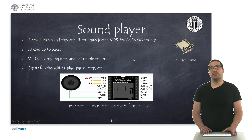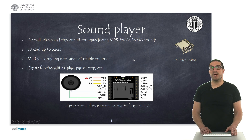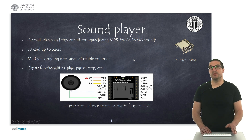As an alternative, we have a sound player which is the DF Player Mini. It's a very cheap and tiny circuit we can use for reproducing MP3 and WAV files. It includes an SD card reader and we can store files with our sounds, and with our microcontroller simply control which files we would like to reproduce — play, stop, pause and so on. It's a very interesting option if you want to generate music or specific voice commands.